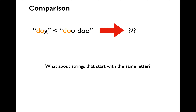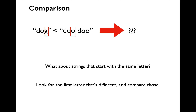How do you compare two strings which have the same characters at the beginning? You'll skip over the common characters, then look at the first non-matching character for your comparison. Let's say we want to compare 'dog' with 'doodoo' using the less than operator. Python is going to look at the character G and the character O and evaluate this expression to true, because G comes before O in alphabetical ordering.